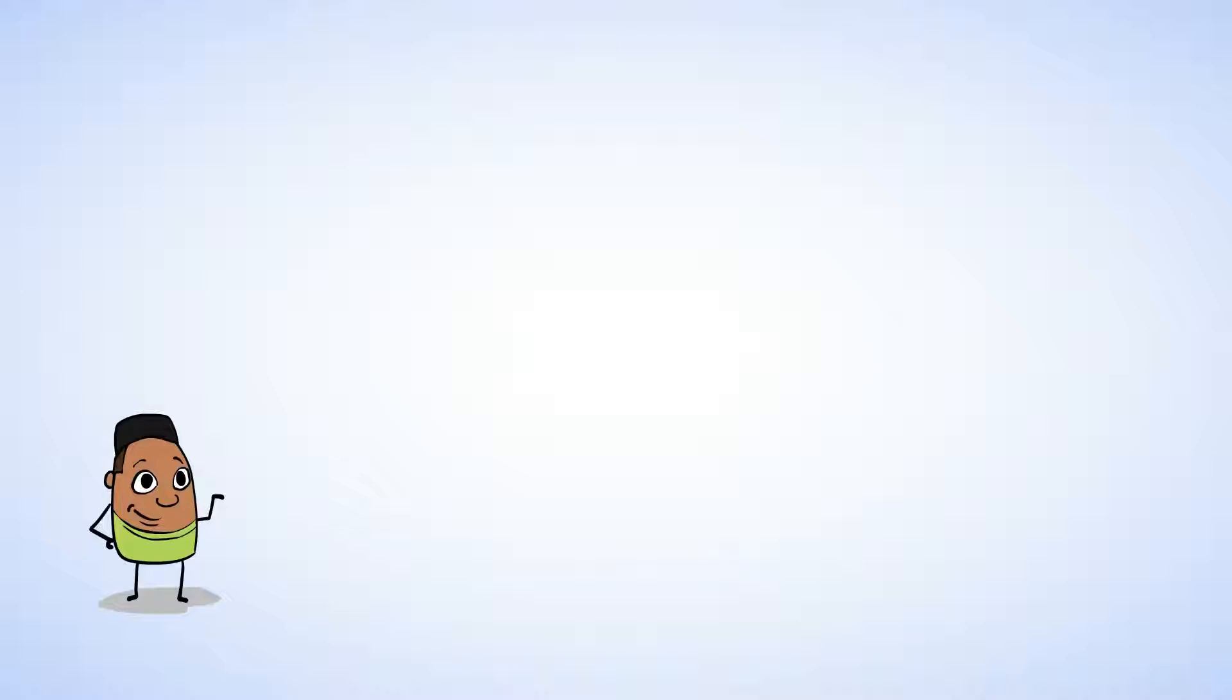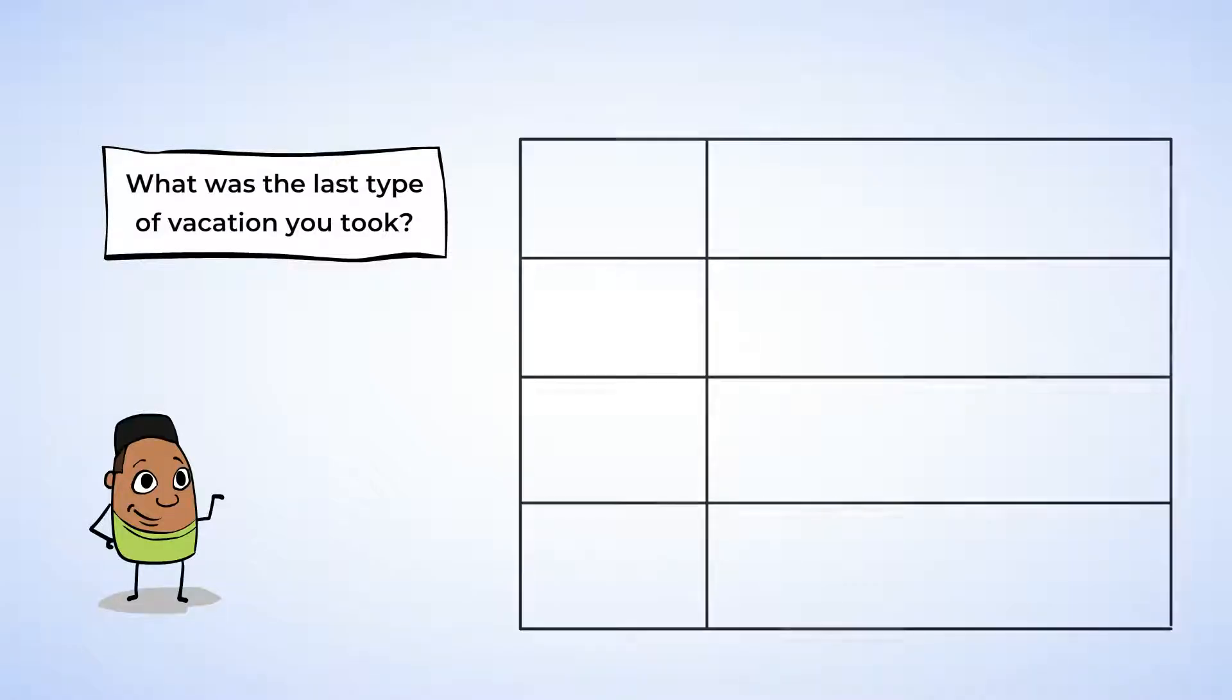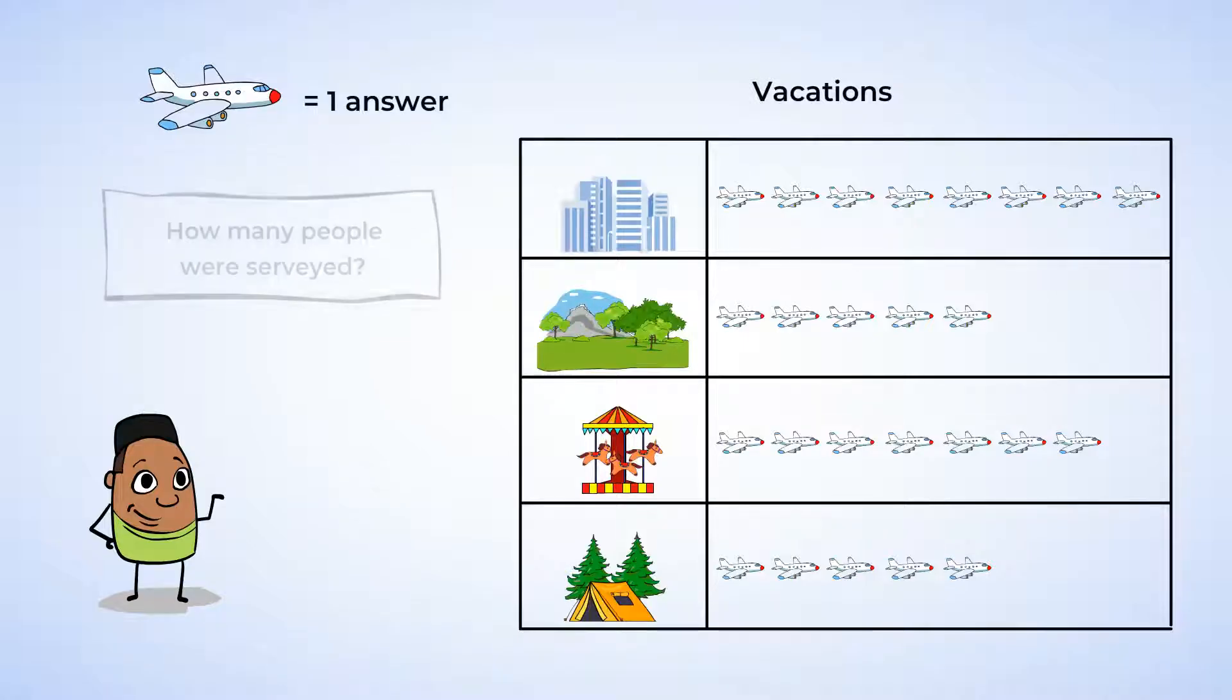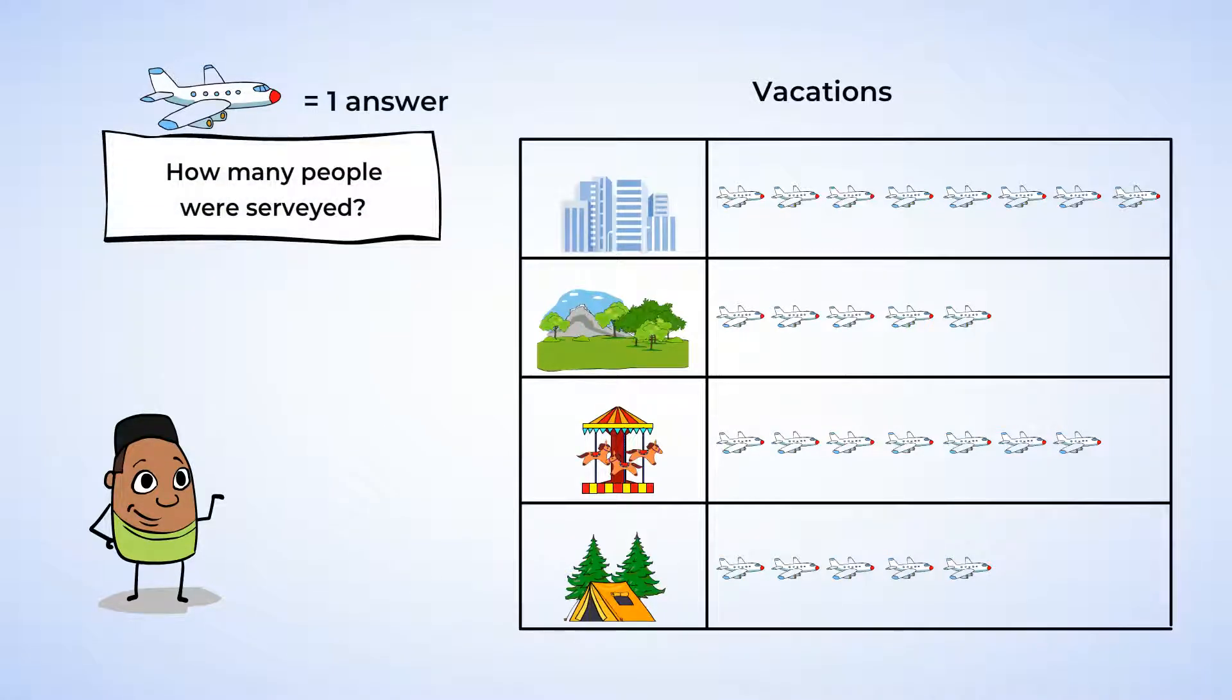Now, here's another survey question. People were asked, what was the last type of vacation you took? Let's take a look at the responses. First, I want to ask you, how many people were surveyed? Well, here, each picture of an airplane represents one person's answer. And if we add up all the answers, we'd have the total number of people who responded. Eight people answered city, five people answered countryside, seven people answered theme park, and five people answered camping.